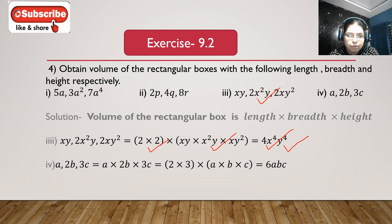Fourth bit: a, 2b and 3c. a is the length, 2b is the breadth and 3c is the height. Volume is a multiplied with 2b multiplied with 3c. 2 multiplied with 3 is 6, and 6 multiplied with abc is 6abc.